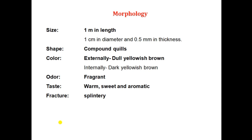Next is morphology. If we talk about the bark, it is 1 meter in length with a diameter of 1 cm. The good quality of cinnamon should possess 0.5 mm thickness. The shape, as already discussed, is available in the form of compound quills. Externally it is dull yellowish-brown in color, while internally it is dark yellowish-brown in color. Odor is fragrant; taste initially appears as warm, sweet and aromatic. Fracture is splintery in nature.